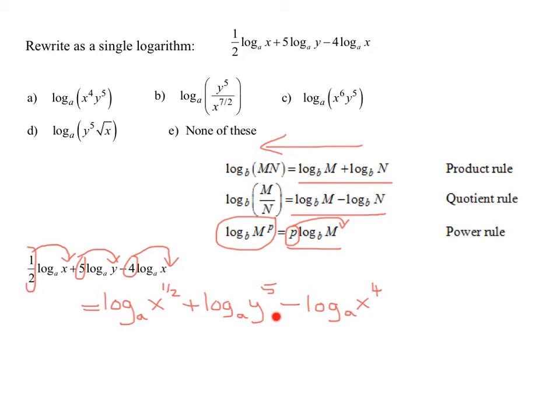So looking at my first two terms, they both have a plus 1 in front of them. So now I can use the product rule. And so now I'm going to combine them. And what do I do to the two arguments? It says I must multiply them. So this is going to give me log to the base a of x to the 1 half multiplied by y to the 5th. It's very important when you go in this direction, your m and n, your two arguments must be multiplied. Do not add these, they're multiplied.